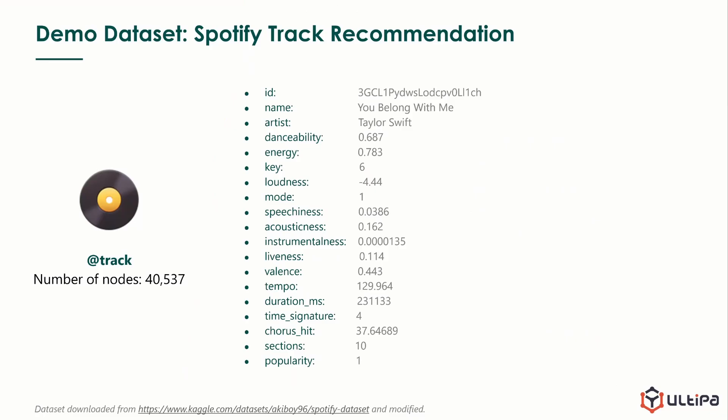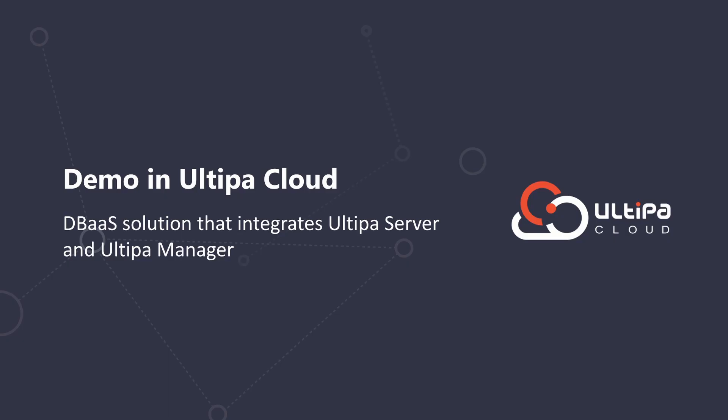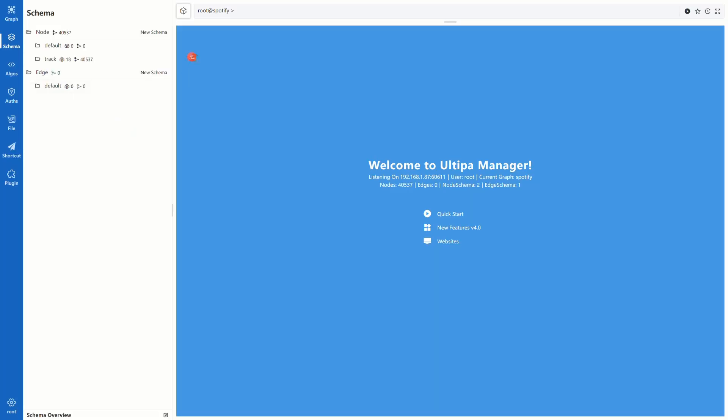For the demo, we prepared the dataset of Spotify music tracks. The dataset contains over 40,000 track nodes. Each track has property like name, artist, and 16 quantified musical features. Our target is to use the algorithms to recommend similar tracks. But we see that all these quantitative features are in different scales, so we further rescaled data into minus 1 to 1, so they are all comparable.